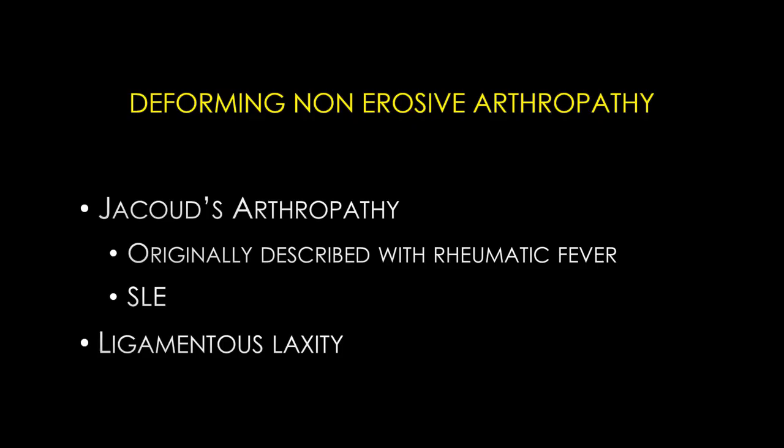So this is what we call a deforming but non-erosive arthropathy, also known as Jaccoud's arthropathy. Jaccoud's arthropathy was originally described with rheumatic fever, but nowadays is most commonly seen with lupus. Only 5 to 40 percent of lupus patients present with deforming non-erosive arthropathy; the most common musculoskeletal presentation is polyarticular arthropathy similar to rheumatoid arthritis. This deforming ulnar subluxation is due to ligamentous laxity and usually reduces when patients press their hands against a table. The important thing is that there are no erosions.